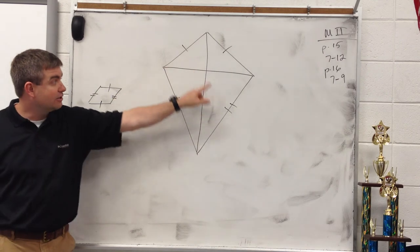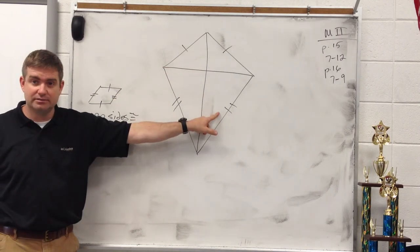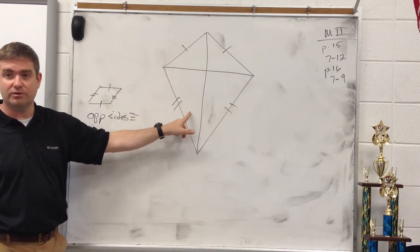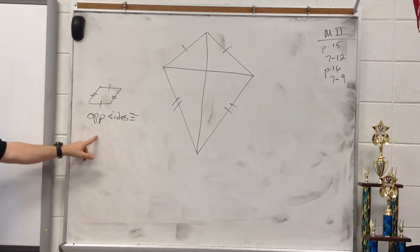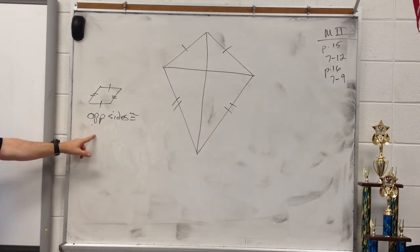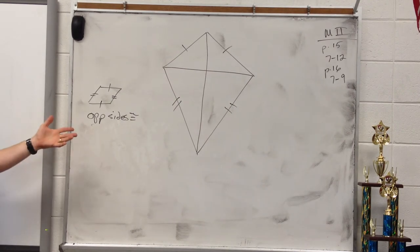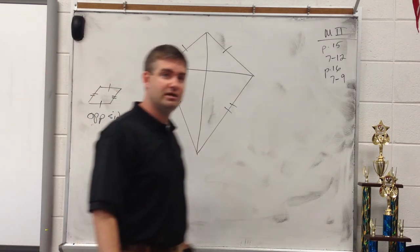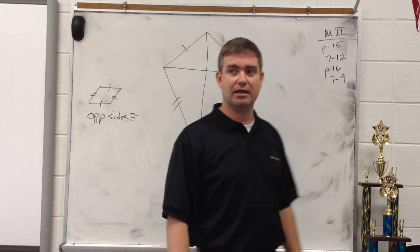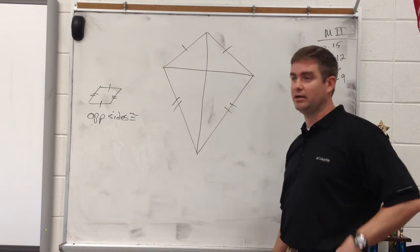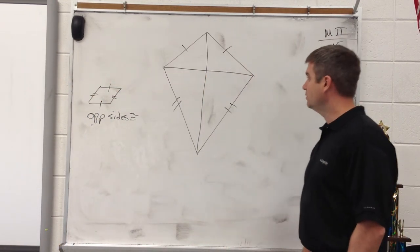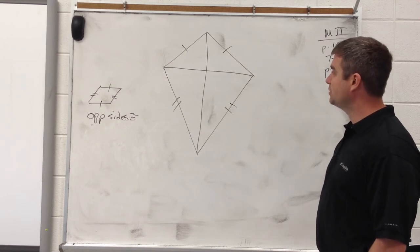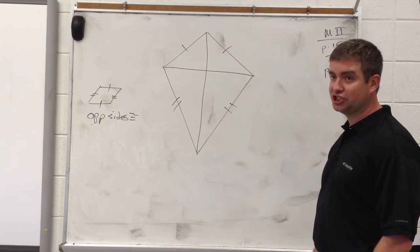Is this side congruent to that opposite side? No. Is this side congruent to that opposite side? No. Because if it were, it would be a parallelogram — that's one of the ways to prove a quadrilateral is a parallelogram. So that's a kite; some people say it looks like a shield.